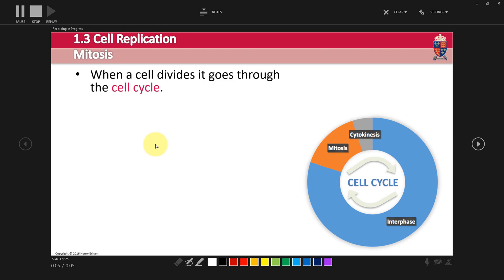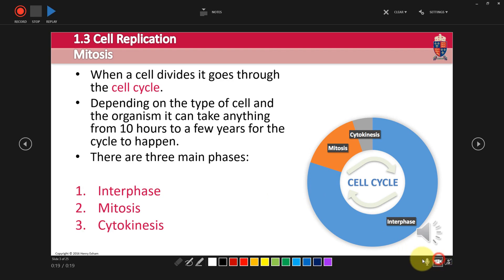When a cell divides, it goes through the cell cycle. The cell cycle lasts about 24 hours, and is split up into the following phases. I can have my camera switched on as well, if I wanted my face down here.